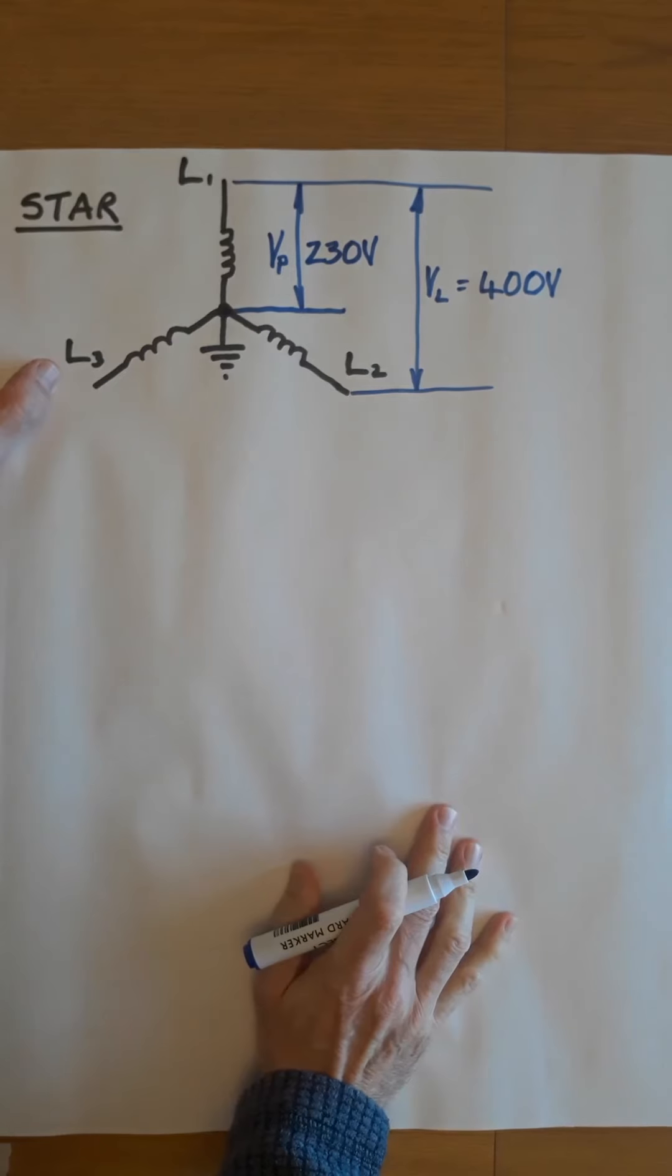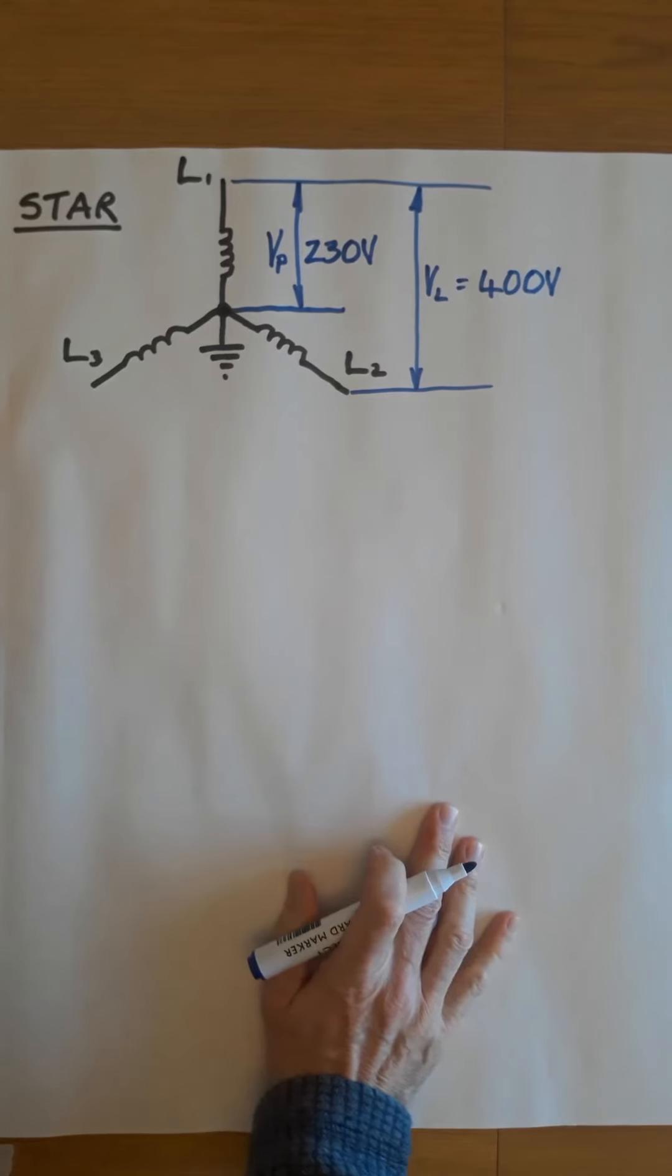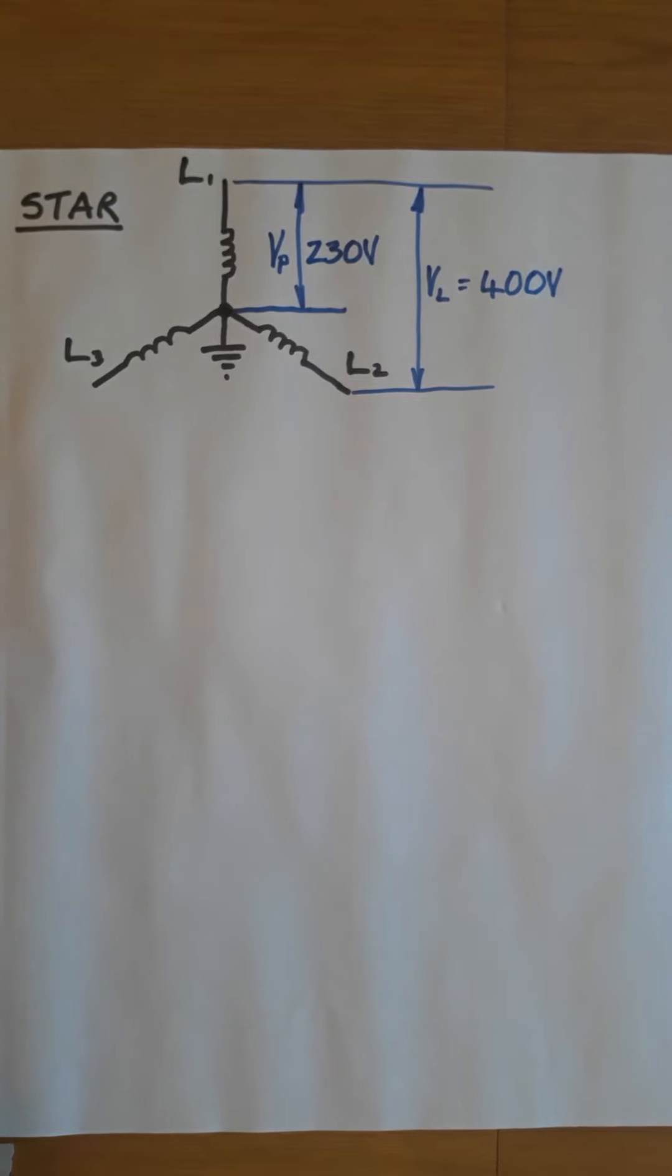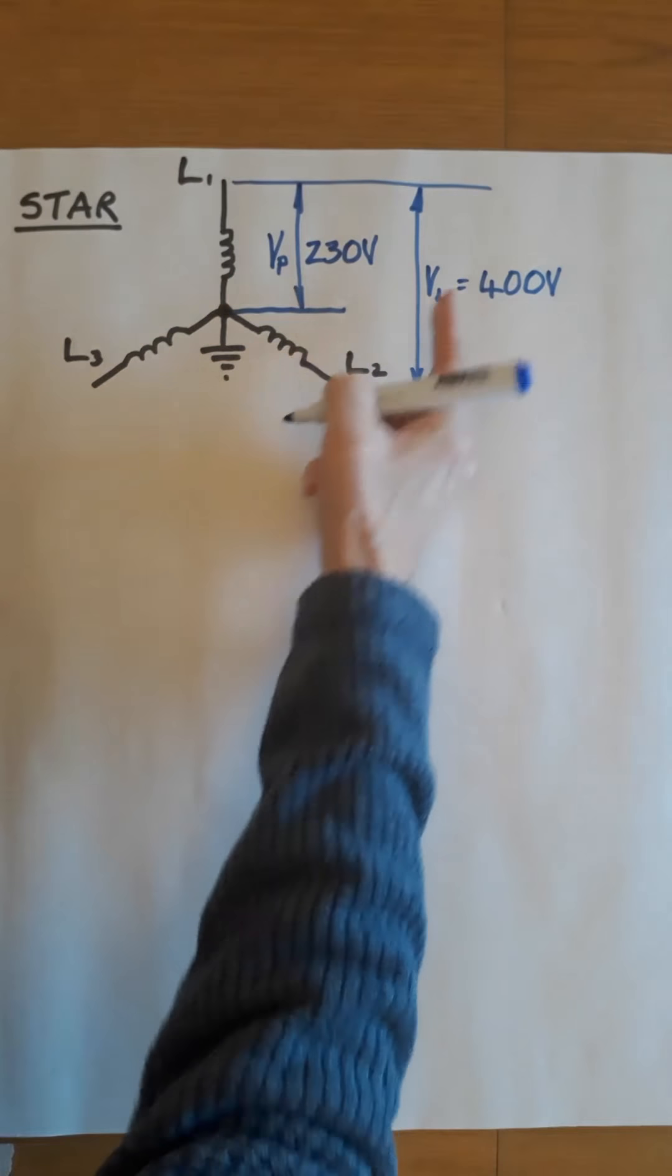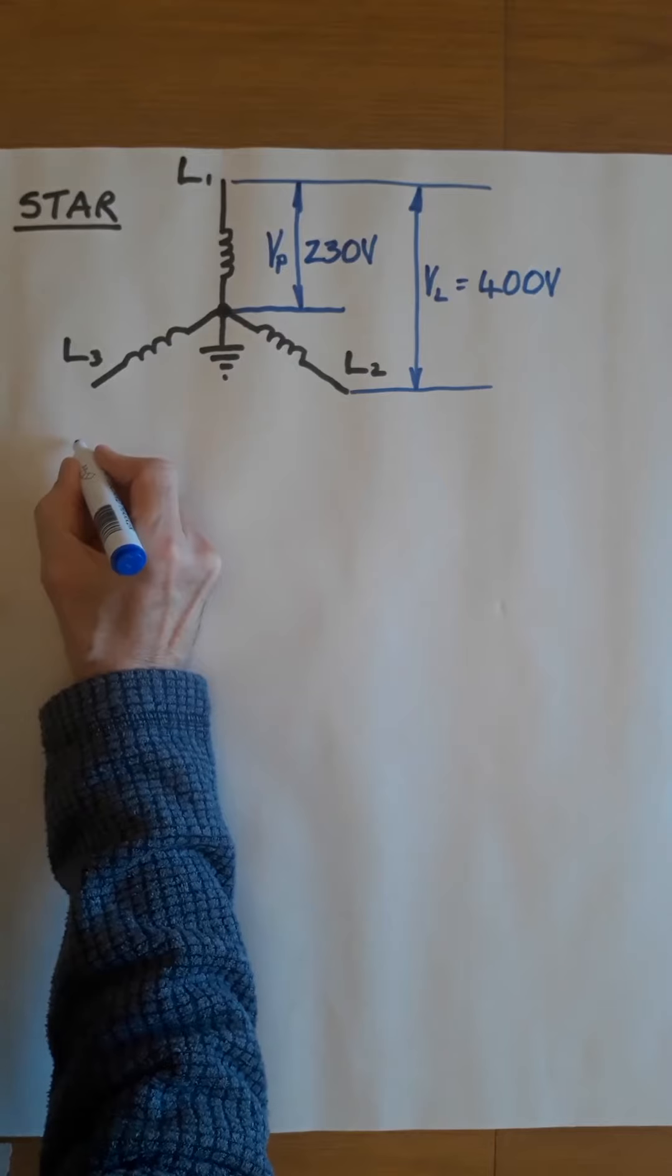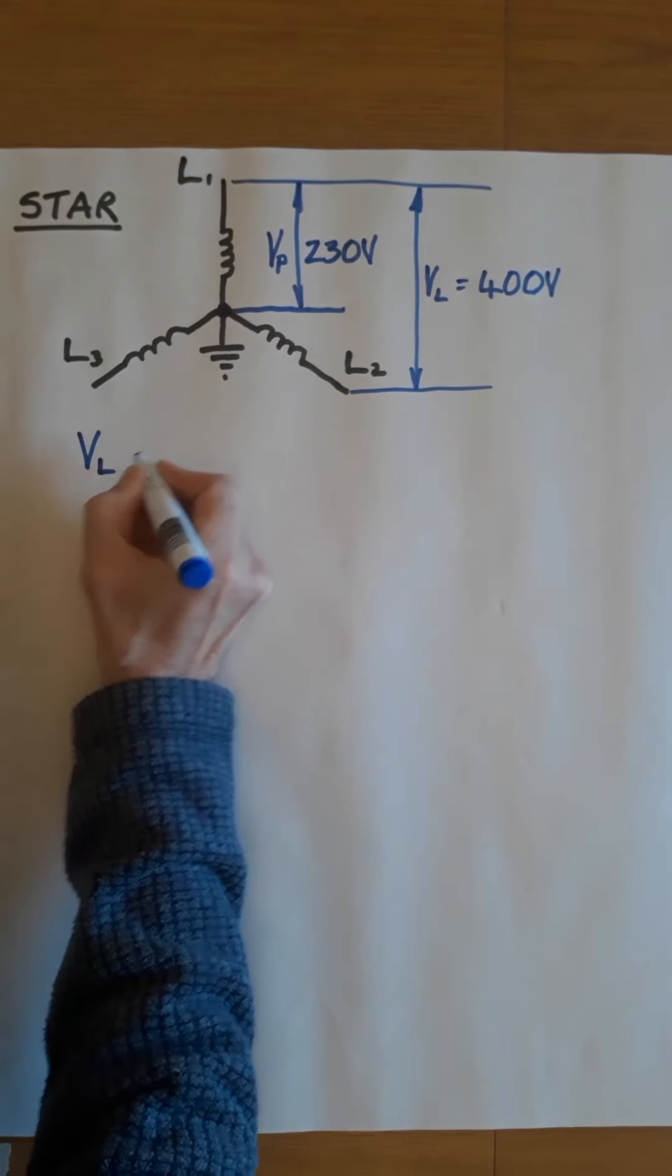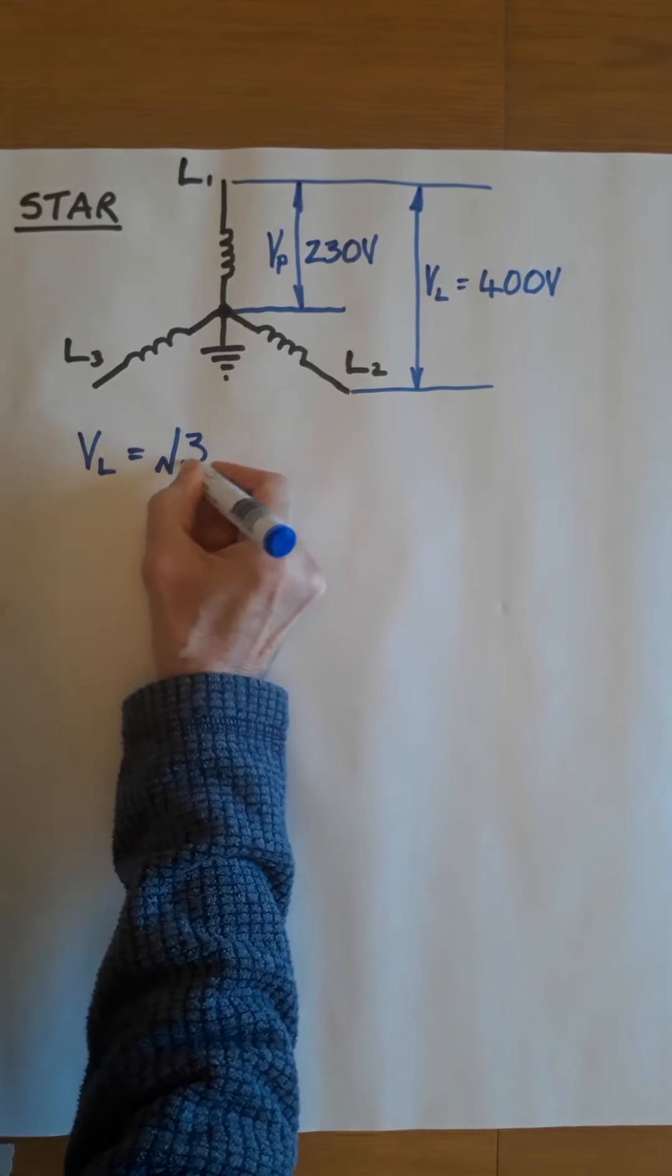So there is a mathematical relationship between these, and it is very important. We can find either the phase voltage or the line voltage if we know the other using the formula: VL equals the square root of 3 times VP.